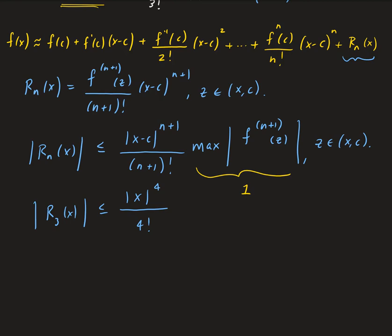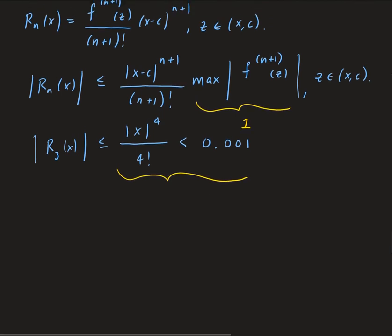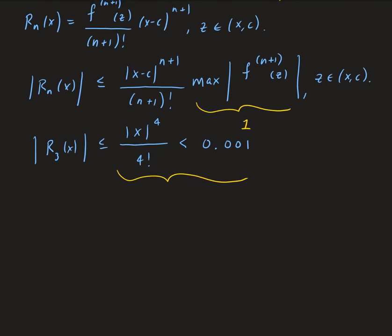We want the residual to be less than 0.001. So we need to solve for x — this is just an algebra problem now. We have the absolute value of x to the 4th power divided by 4 factorial is less than 0.001.